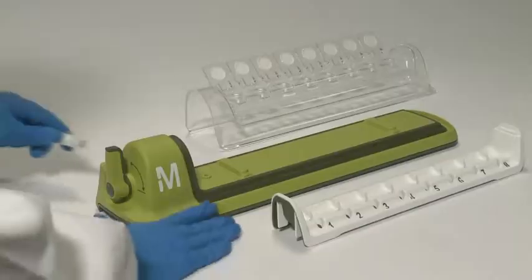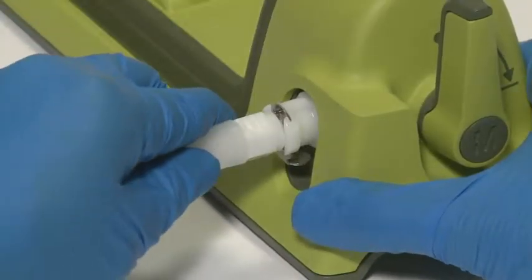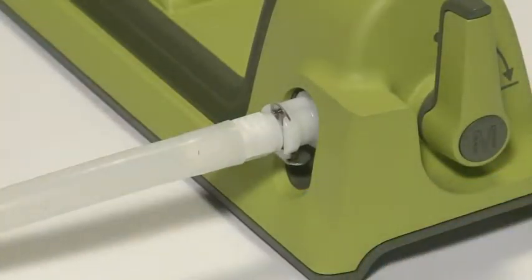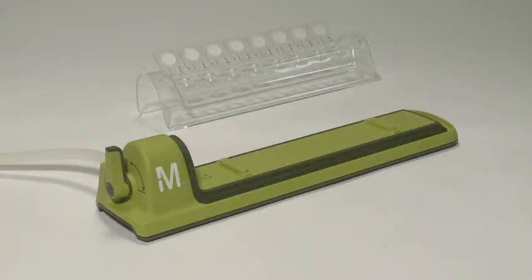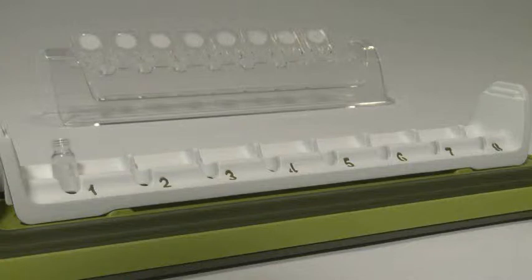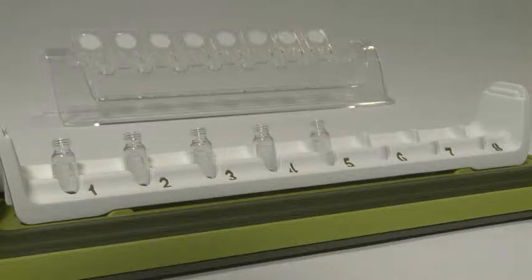Your first step is to connect the system to a vacuum pump or house vacuum using the connection tube provided. Once the vial tray has been placed into the base of the unit, you can load your vials. The system can accommodate most standard 12 by 32 millimeter HPLC vials.